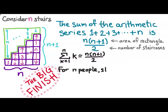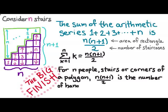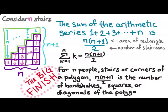And now for the big finish. What we found is that for n people, stairs, or corners of a polygon, n times n plus one over two is the number of handshakes, squares, or diagonals of the polygon. It turns out it's all the same problem, or at least it's all the same answer.